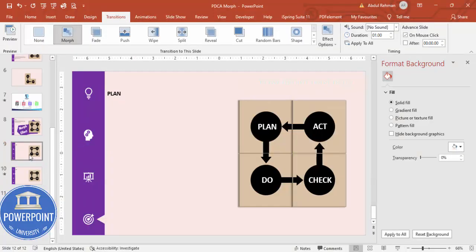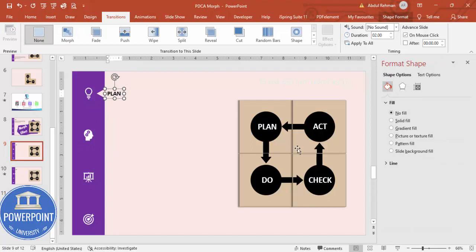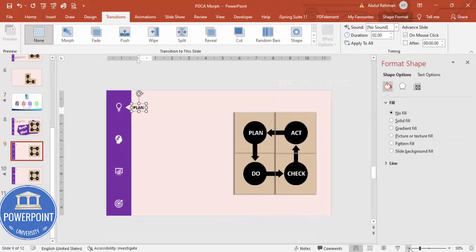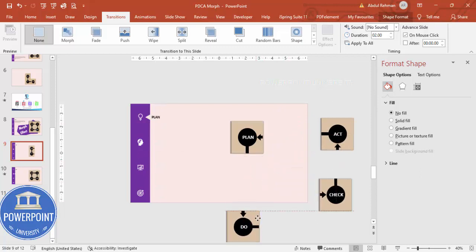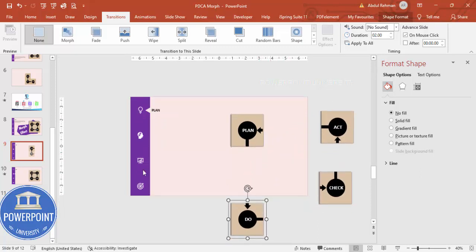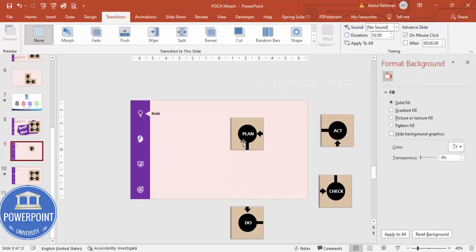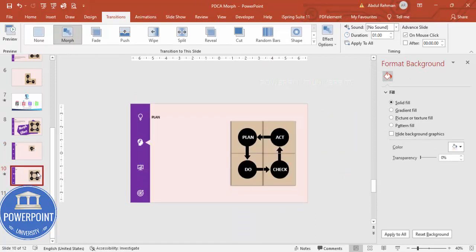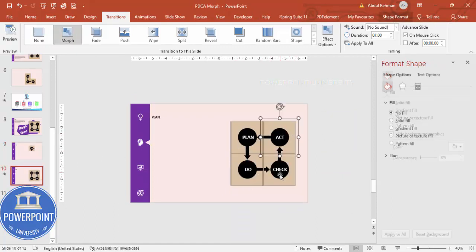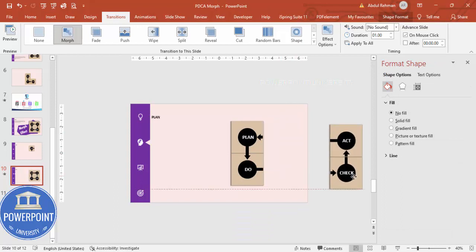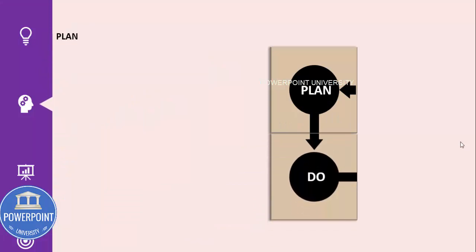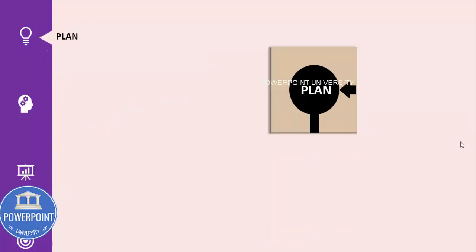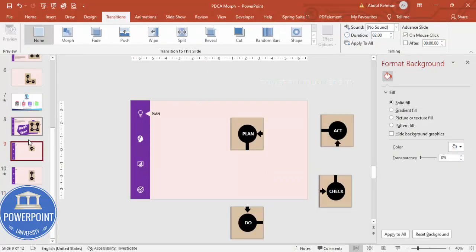On the first slide, all four items are shown. Move the Do, Check, and Act shapes off-screen so only Plan is visible. On the next slide, Do should appear and Plan moves out. Items not visible should be positioned outside the slide boundary. Play to confirm Plan and Do animate correctly.